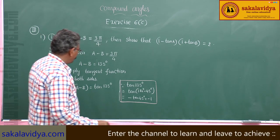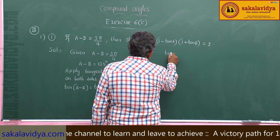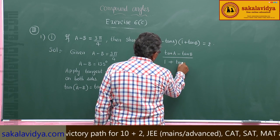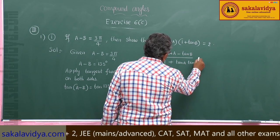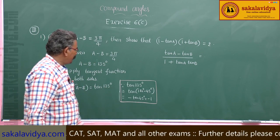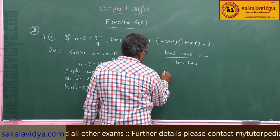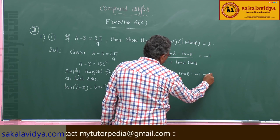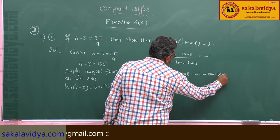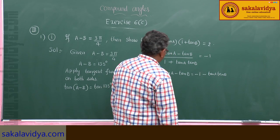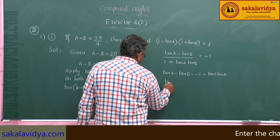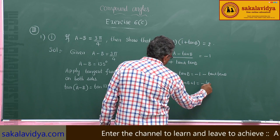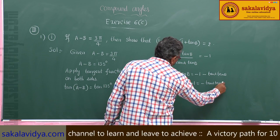So, tan of A minus B equals tan A minus tan B divided by 1 plus tan A tan B, which equals tan 135 = minus 1. Cross multiplying: tan A minus tan B equals minus 1 minus tan A tan B. Rearranging: tan A minus tan B plus 1 equals minus tan A tan B. Call this equation 1.